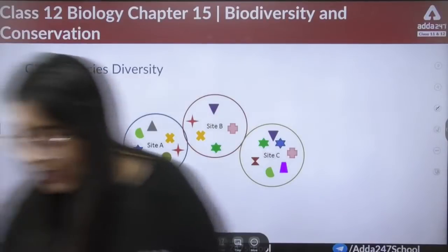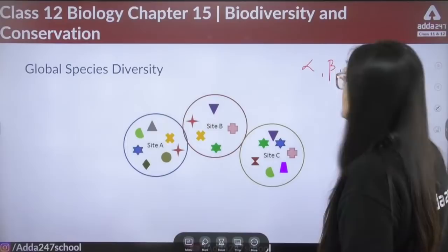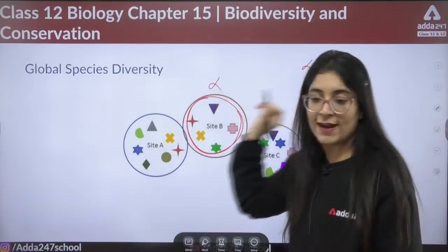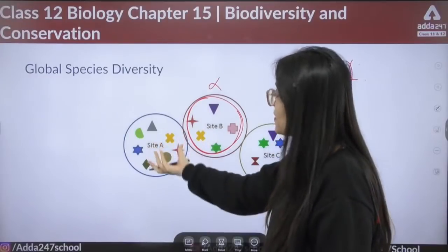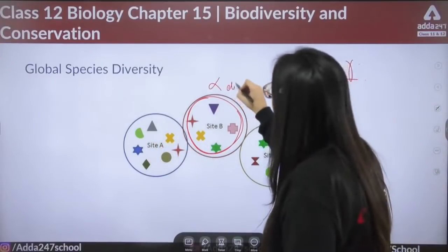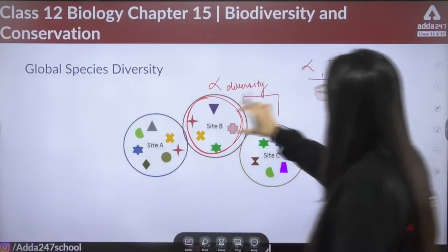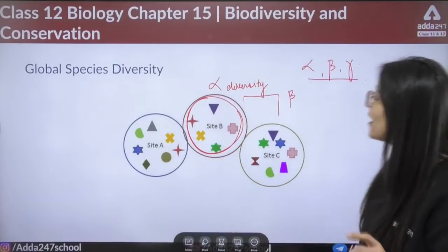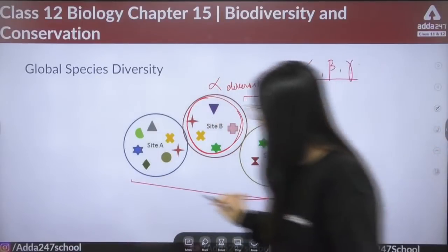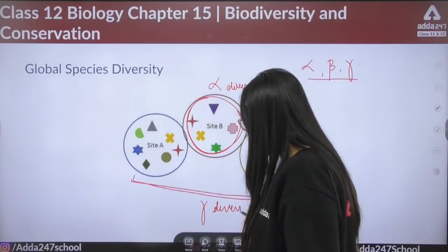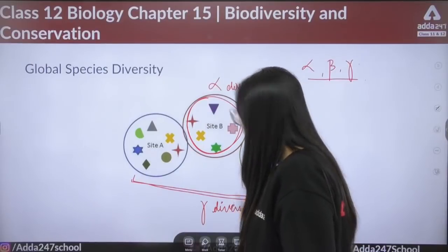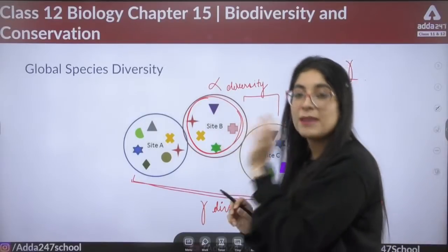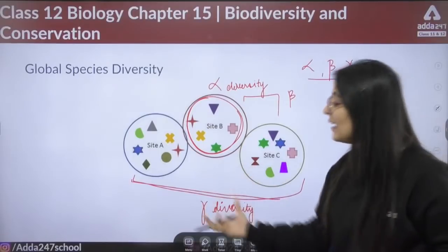Alpha, beta, and gamma diversity are types of global species diversity. Alpha diversity refers to diversity within a single site. Beta diversity is when we compare species between two adjacent sites — the genes and species that can move between them. Gamma diversity is when we consider all species across all sites in one area combined.